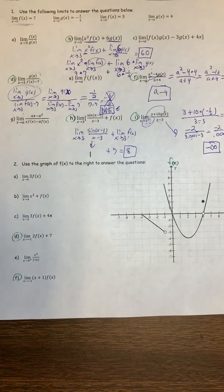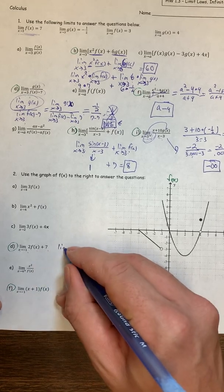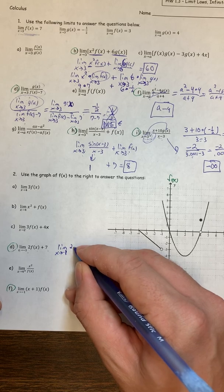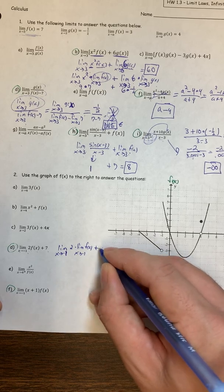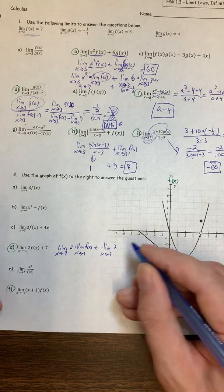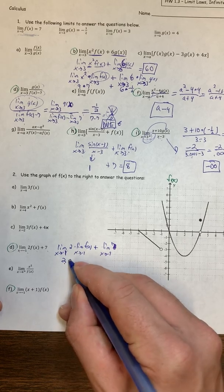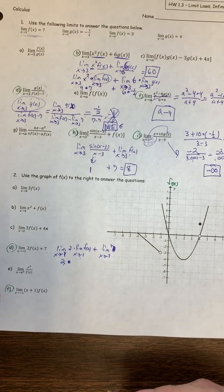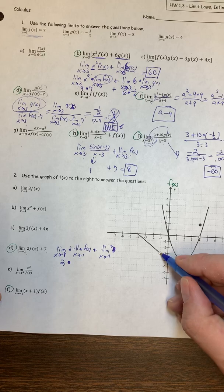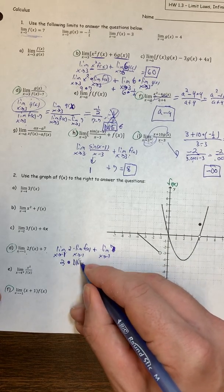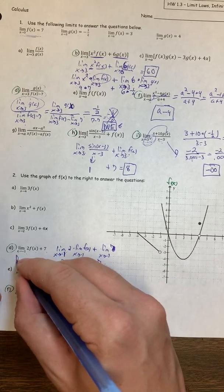A couple of other tricky ones: the limit as x goes to negative 1 of 2 times f(x) plus 7. This splits into 2 times the limit as x goes to negative 1 of f(x), plus the limit of the constant 7. As x goes to negative 1, the right side of f(x) goes to 5 and the left side goes to negative 3, so this limit does not exist. If we have 2 times something that does not exist plus 7, the entire limit does not exist.